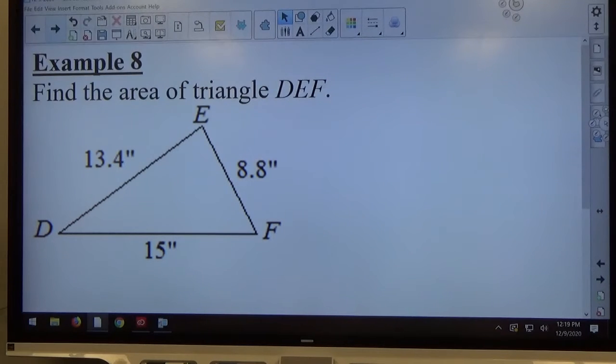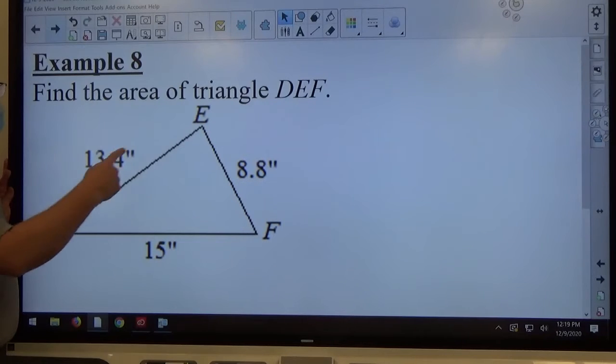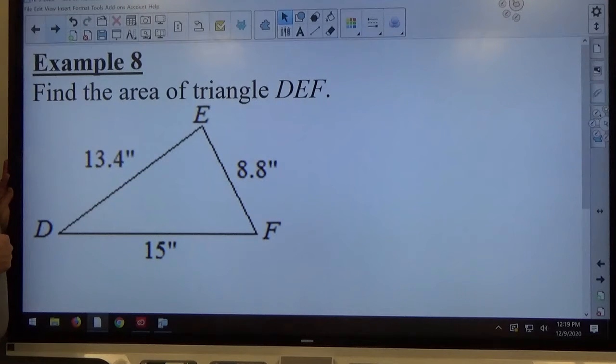Okay, moving on to example 8. Notice we have triangle DEF, and the side measures are 13.4 inches, 8.8 inches, and 15 inches. You can see that none of the sides are equal, so it's a scalene triangle.